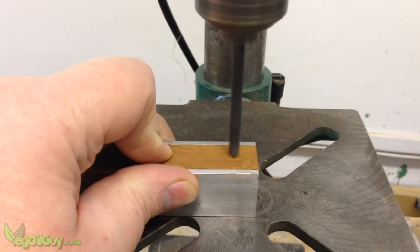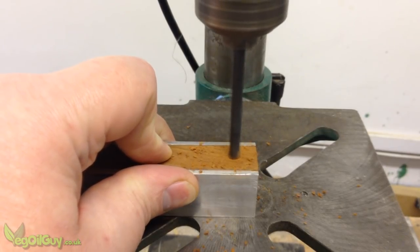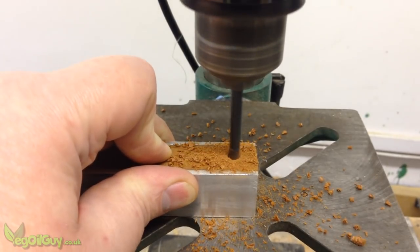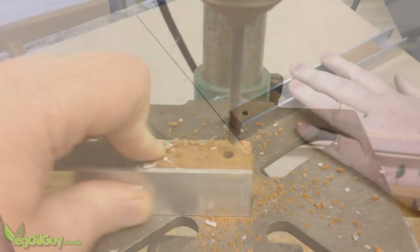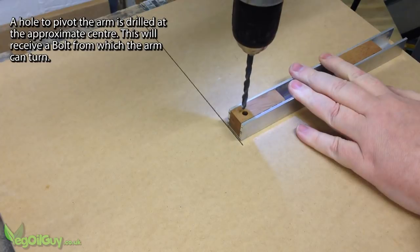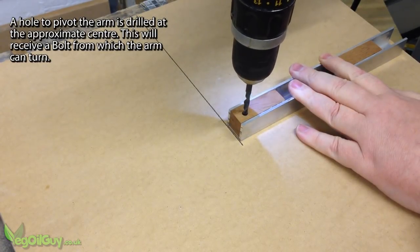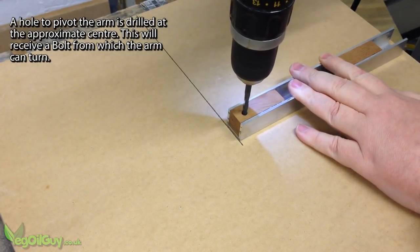With the adhesive dry, I drilled a pivot point hole at one end. It was then just a matter of working out where this pivot point should go and lightly marking this onto the MDF.